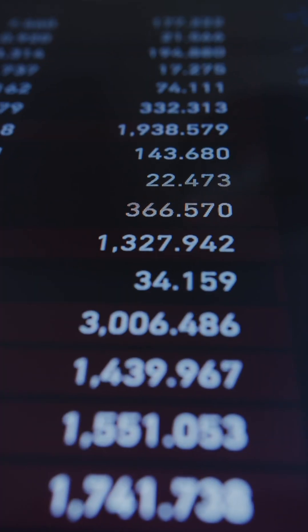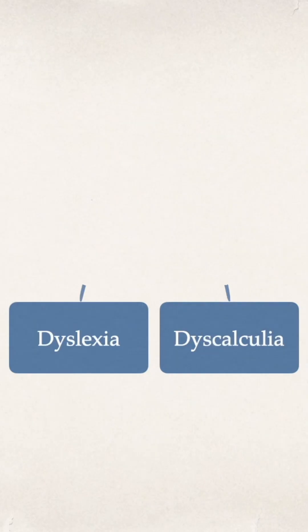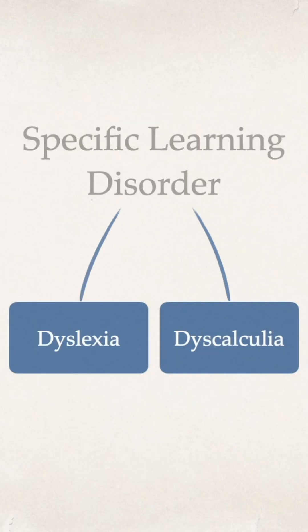Here's a short explanation of dyscalculia. Dyscalculia is a learning difficulty that affects a person's ability to understand and work with numbers. It falls under the same category as dyslexia, namely a specific learning disorder.